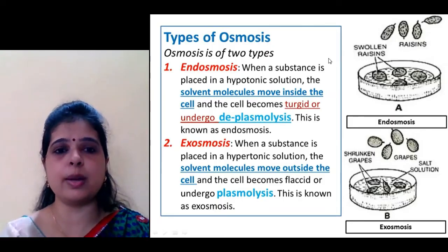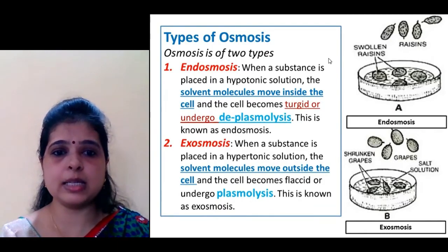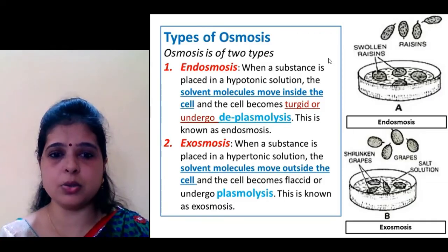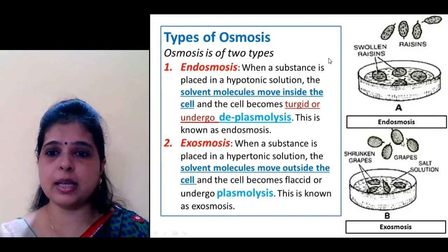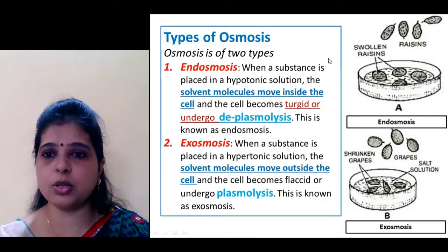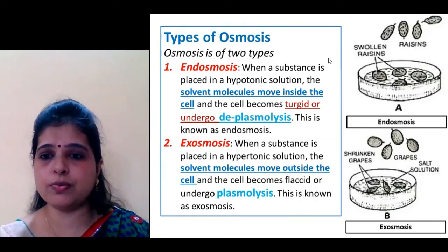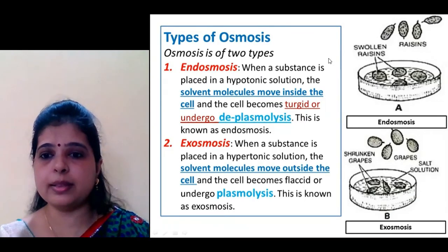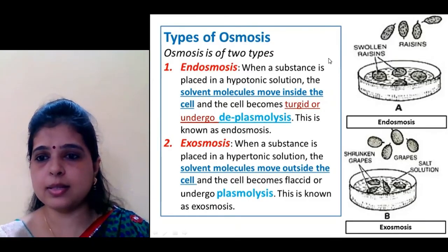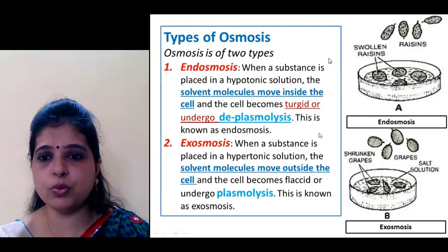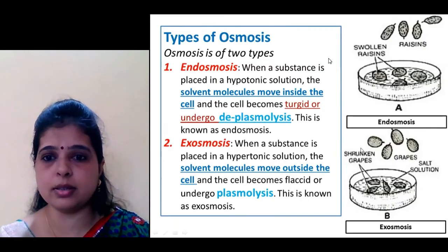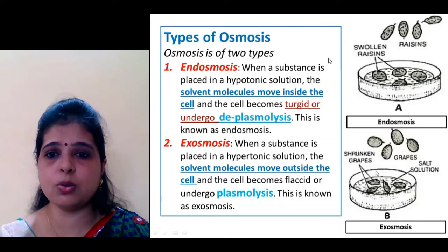In exoosmosis, when a substance is placed in a hypertonic solution, the solvent molecules move outside the cell, and the cell becomes flaccid and undergoes plasmolysis. This is called exoosmosis. For example, if you take fresh grapes and place them in a salty solution containing a higher concentration of salt or solute, the grapes will lose water to the salty hypertonic solution. Water will move out from the grapes, resulting in shrunken grapes — that is the exoosmosis process.